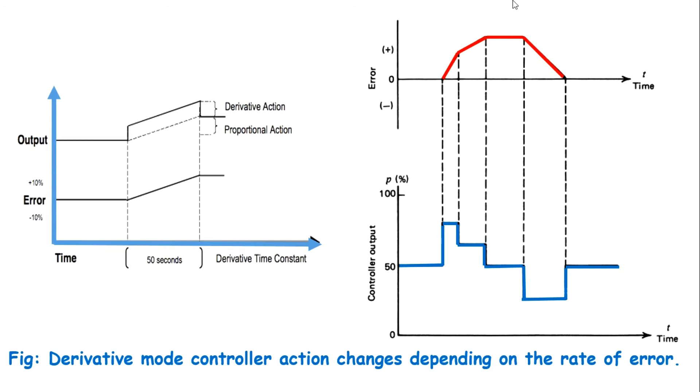While sudden or rapid change in error leads to control signal of a larger magnitude, gradual change leads to small magnitude. Even if the error is huge, the derivative controller will generate no signal if the error is constant. Thus, derivative controller is not used alone. It is always used with the P controller.